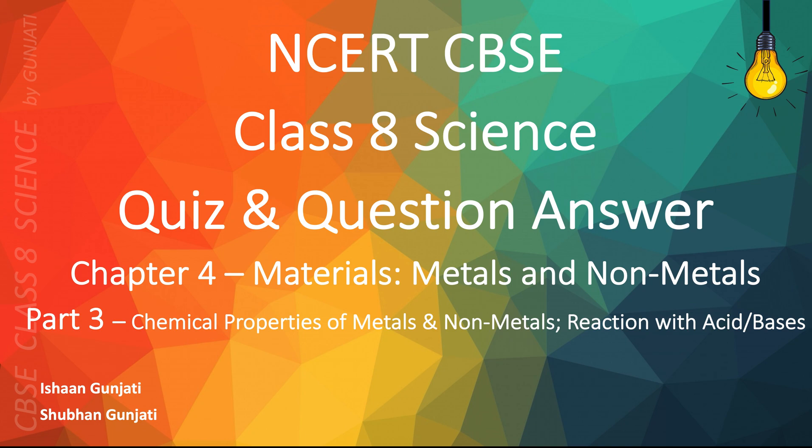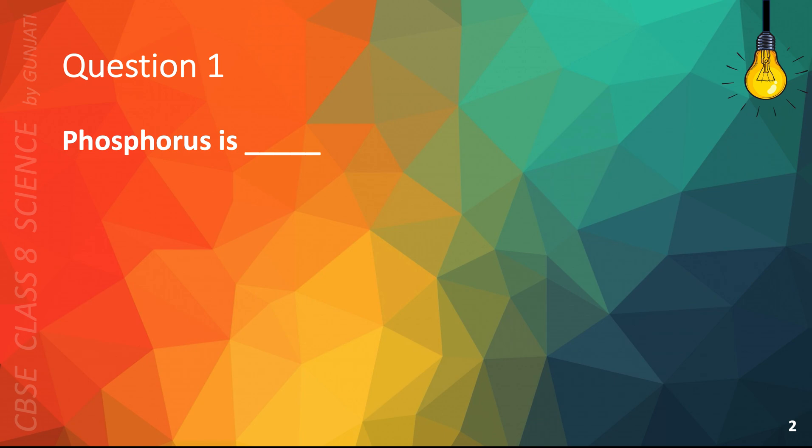Let's get right into the quiz. Question 1: Phosphorus is — A. Reactive, or B. Non-reactive. The correct answer is A. Reactive.